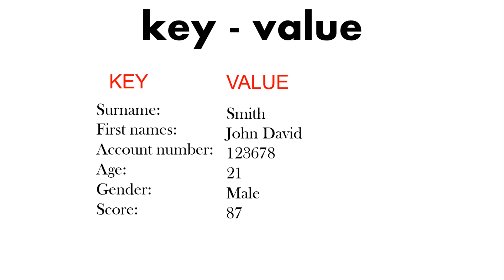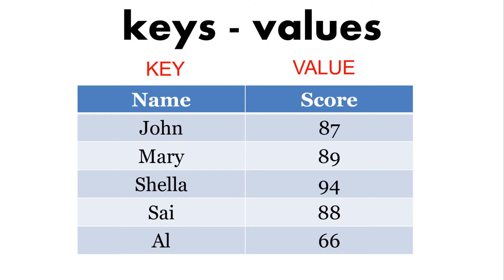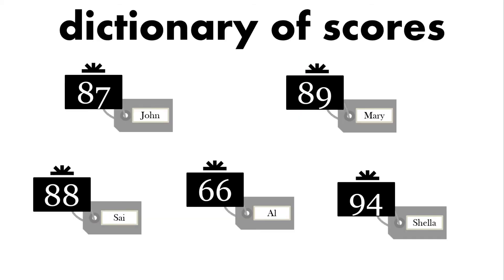For example, the key 'surname' has the value 'Smith', key 'first name' has value 'John David', and 'account number' has value '123678'. We see these in tables — for example a scores table where the key is the name and the value is the score. So in a dictionary we have these labels or keys paired with values.